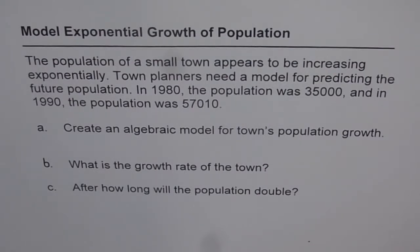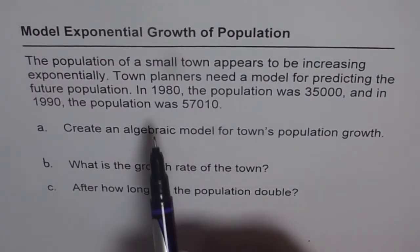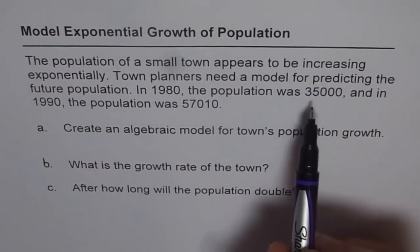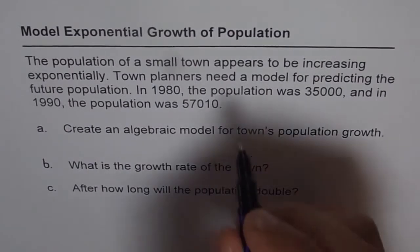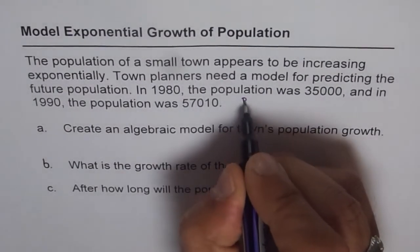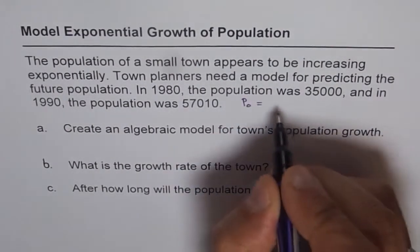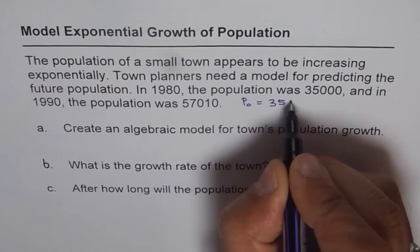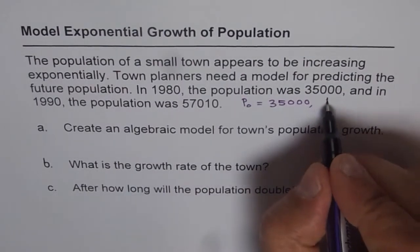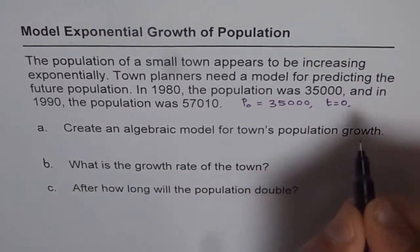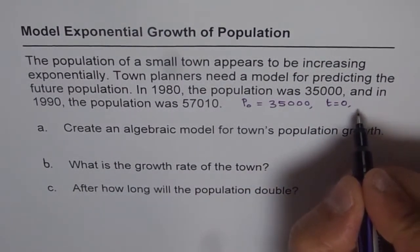Let's see how to solve these kinds of questions and how to model an exponential growth of population. What we are given here is that in 1980 the population was 35,000. Let us take this as the initial population. So we will write P initial, that is P0, starting with 35,000. So this will be at t equals to 0 where time t is starting from 1980.